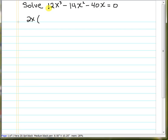And we need to find what's left after we factor out that 2x, so we divide each of the original terms by 2x. So now we get here 6x squared minus 7x minus 20.